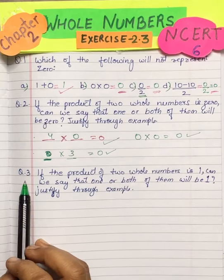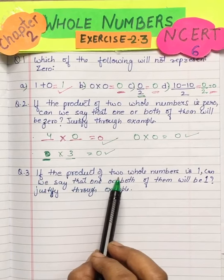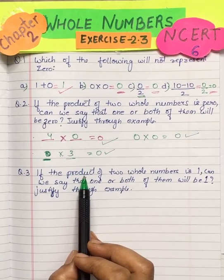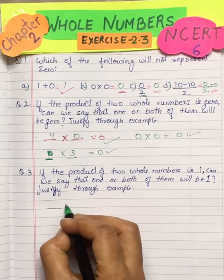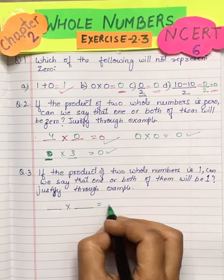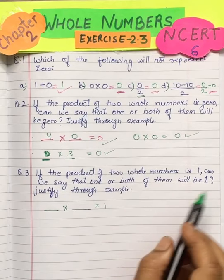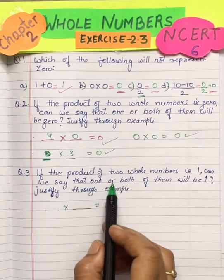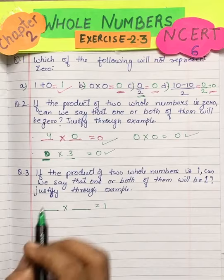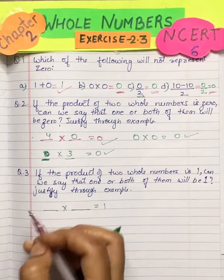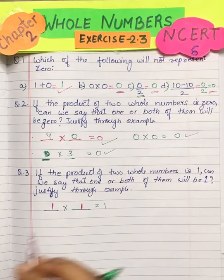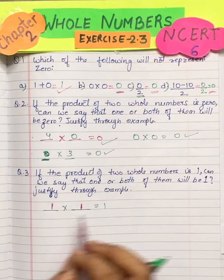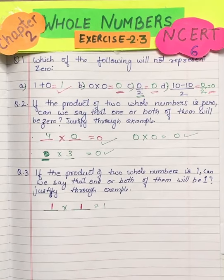Now let's do the third question. If the product of two whole numbers is 1, means when you multiply any two whole numbers you get 1, then can we say that one or both of them will be 1? Now if I write both of them as 1, what do you get? 1 into 1 is 1.